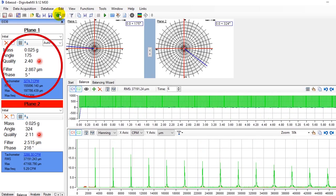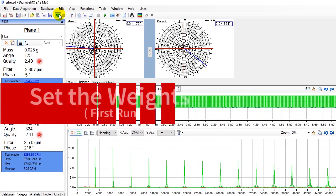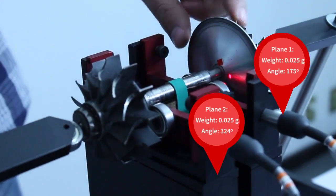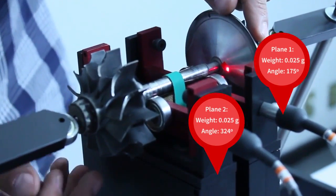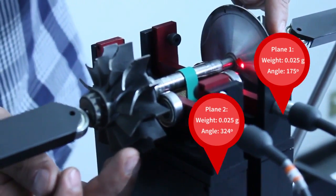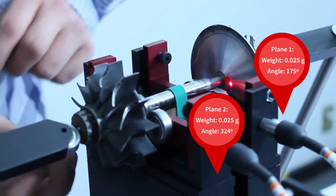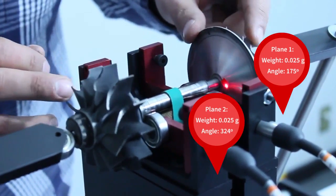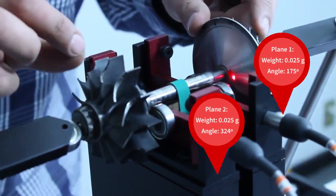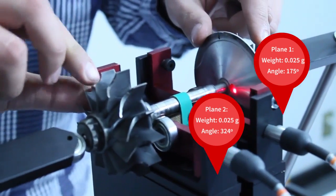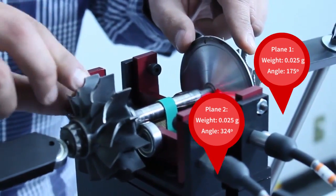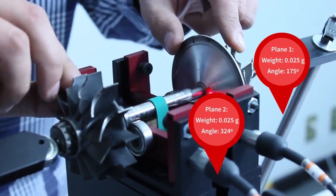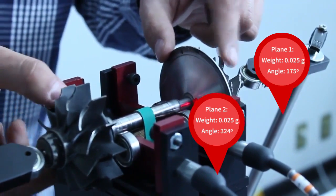Immediately after the two signals are recorded, we will see the correction masses and angles for both planes on the left column. We weight the correction masses using a precision scale and we place them at the angle indicated by the digivine. Seeing the rotor from plane 1, the zero points always horizontally to the right. From this mark, we measure the angles counterclockwise. If you look from plane 2, the mark is on the left and you measure the angles clockwise.